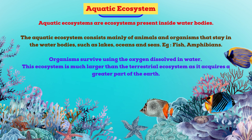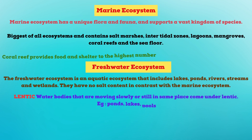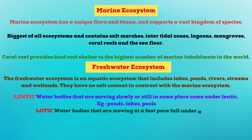Aquatic ecosystems are ecosystems present inside water bodies. They consist mainly of animals and organisms that stay in water bodies such as lakes, oceans and seas. The best example is fish and amphibians. Organisms survive using the oxygen dissolved in water. This ecosystem is much larger than the terrestrial ecosystem as it acquires a greater part of the earth.